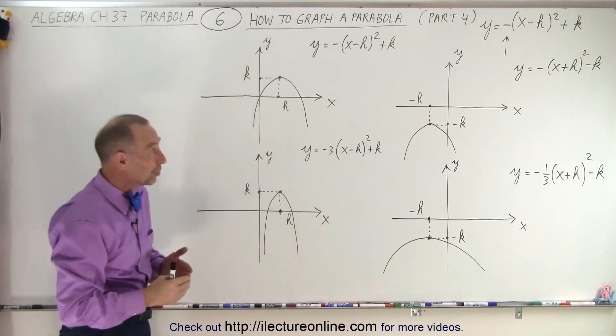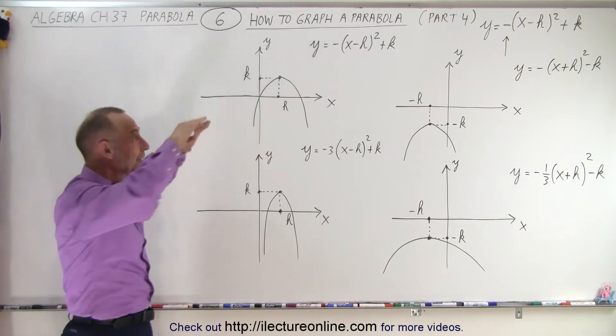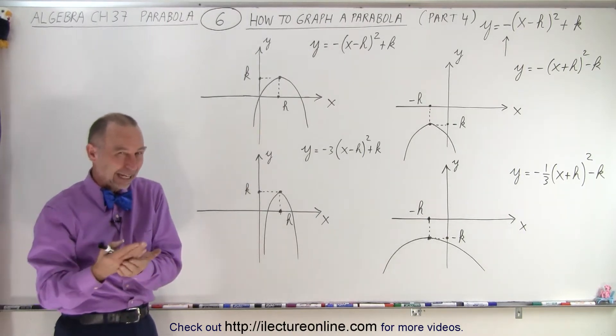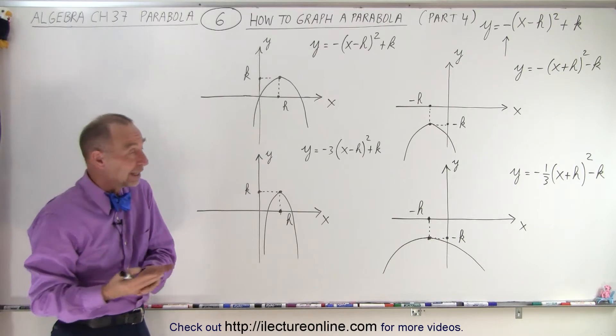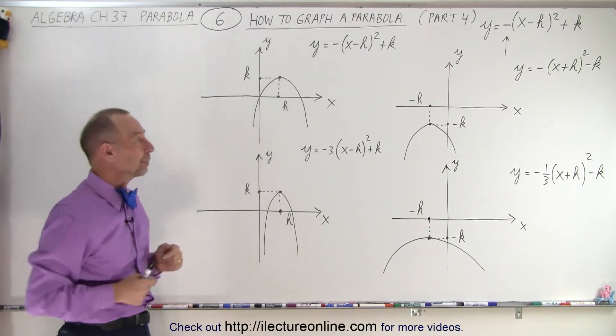So what does that negative sign do? It simply takes a parabola that normally would open upward and makes it open downward. Just like when we put a negative in front of the A or when A is negative, we have a downward opening parabola instead of an upward opening parabola.